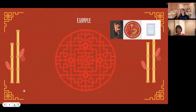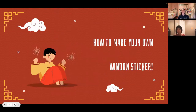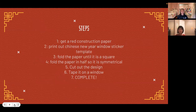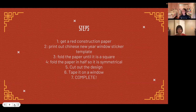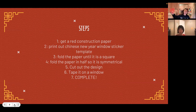Here is an example of how to make your own window sticker. Step one: get a red piece of construction paper. Step two: print out a Chinese New Year window sticker template. It should look like this. Fold the paper until it's a square, then fold the square in half so it's symmetrical. Cut out the design and tape it on the window. Now you're complete. Here are some end results.